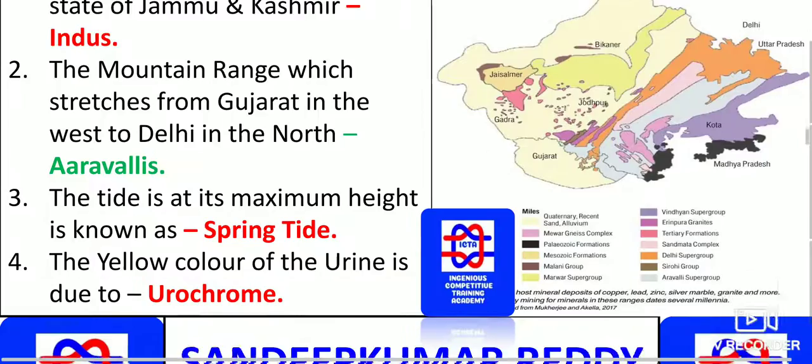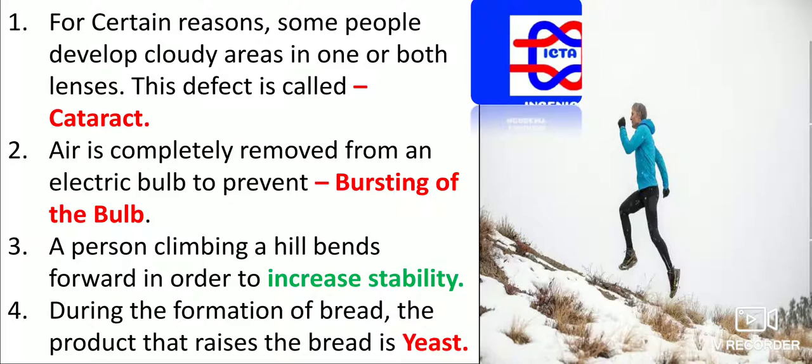For certain reasons, some people develop cloudy areas in one or both lenses — this defect is called cataract. Due to this clouding of the lens, a cataract operation is needed for proper vision.